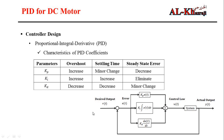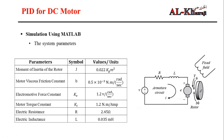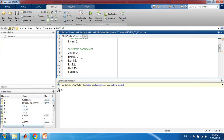We will simulate the open loop of the DC motor first, then tune KP, KI, and KD to improve system performance. For the simulation, we use these parameters: moment of inertia J = 0.022, motor friction B = 0.5×10⁻³, electromotive force constant Ke and motor torque constant KT both equal to 1.2, electrical resistance R = 2.45, and electrical inductance L = 0.035.